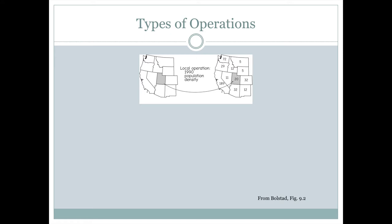With a local operation, we're only concerned with the values associated with one polygon. In this example, we're looking at population density and we're just concerned with the polygon for the one state indicated in gray, Utah.